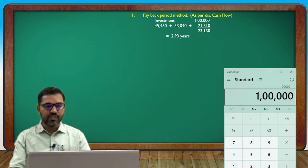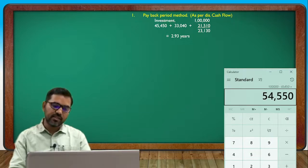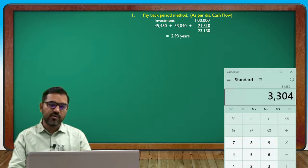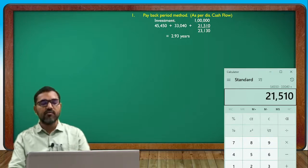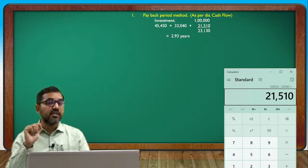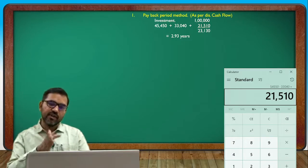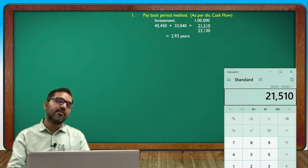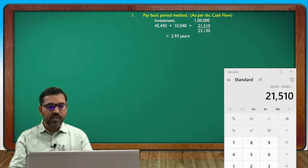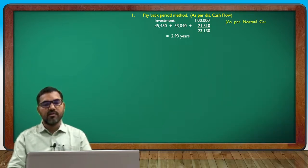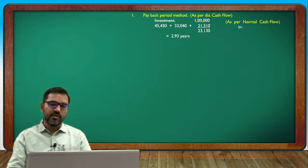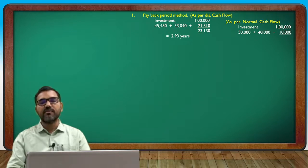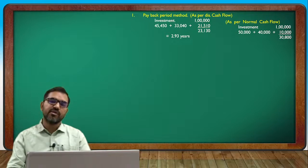The investment is 1,00,000. First year discounted cash flow is 45,450, so the remaining balance is 54,550. Second year is 33,040, leaving 21,510. In the third year, cash flow is 23,130 — we divide 21,510 by 23,130 to get approximately 0.93 years. So the payback period is approximately 2 years and 0.93 months, completing around the third year.